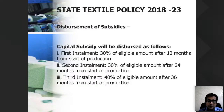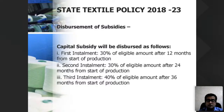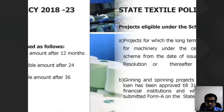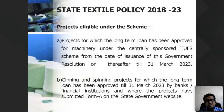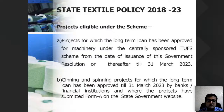Unlike ATUFS where subsidy is given in one go, state TUFS releases it in installments: the first installment of 30% of the eligible amount is given after 12 months from the start of production; the second installment of 30% after 24 months; and the third installment of 40% after 36 months from the start of production. In practice, it can take four to five years to receive the full subsidy.